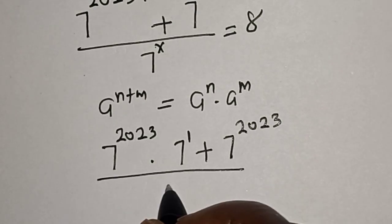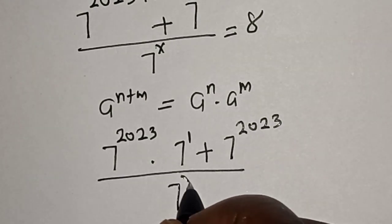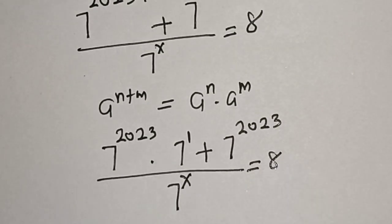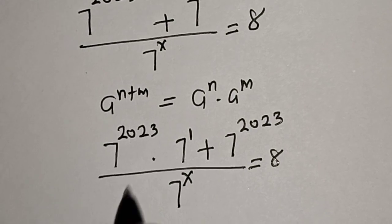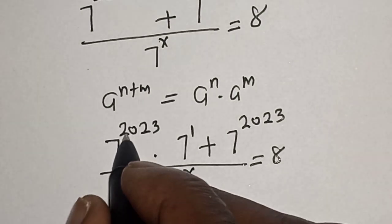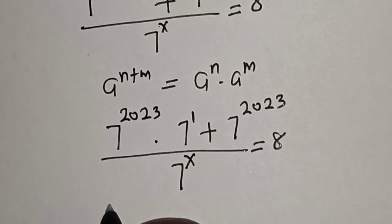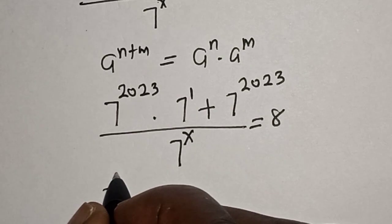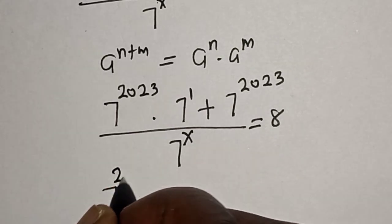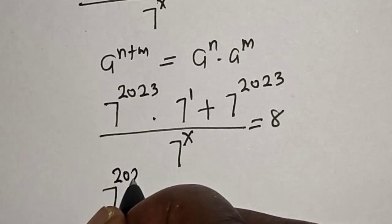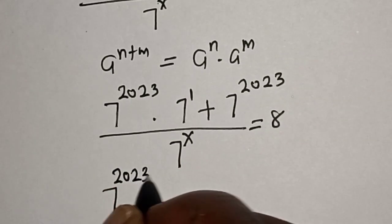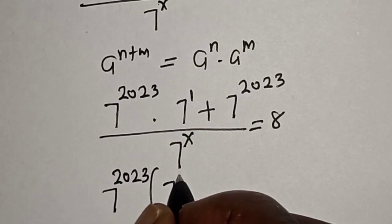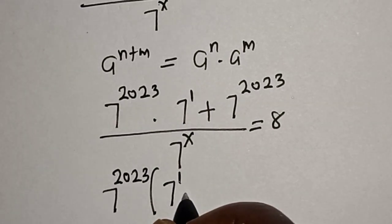Divided by 7 raised to power x. We factor out 7 raised to power 2023, giving us 7 raised to power 2023 times open bracket 7 raised to power 1...